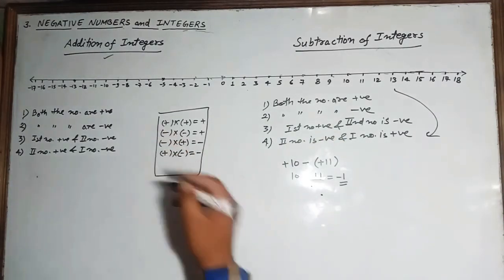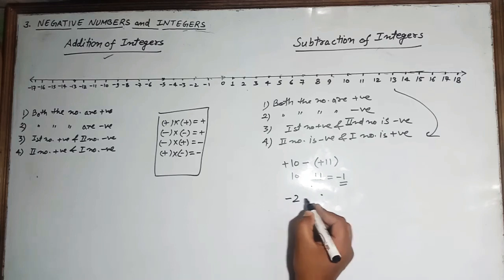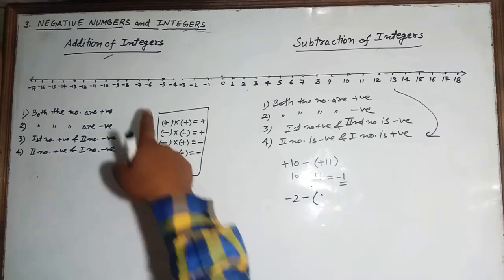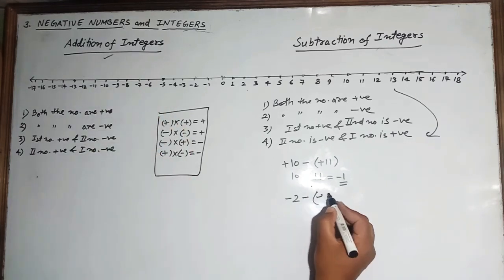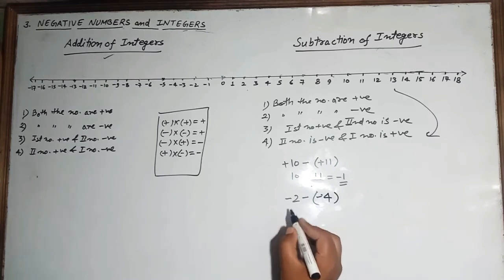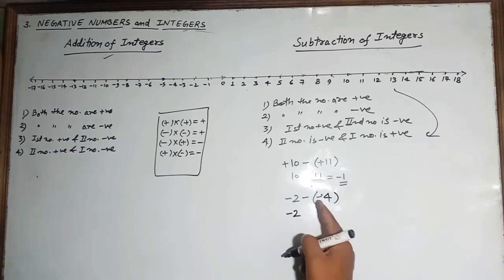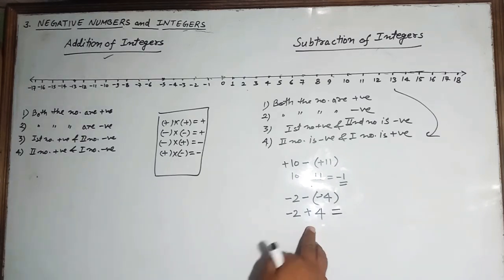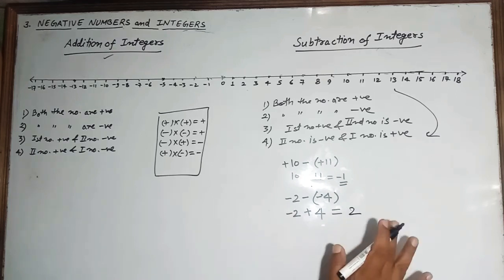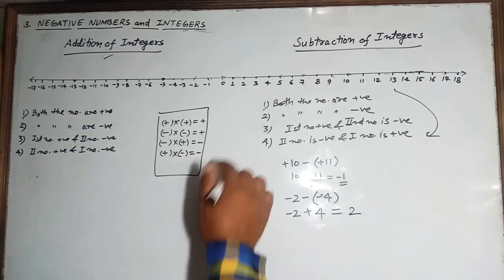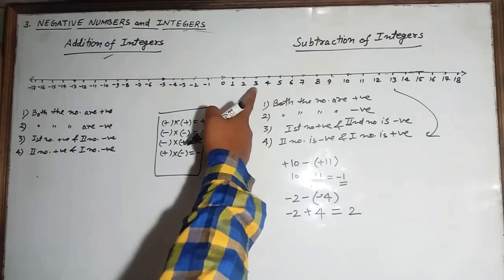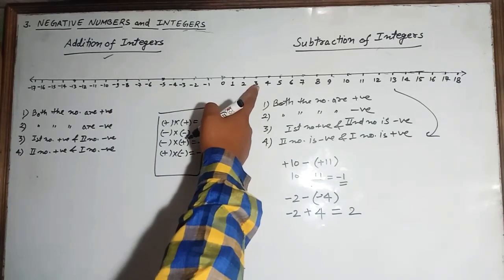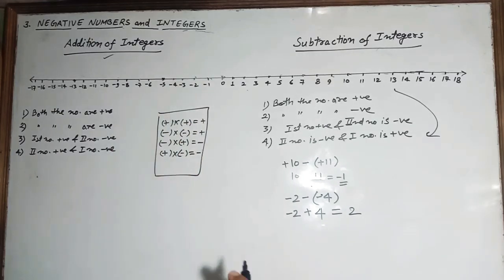Case 2 — both numbers negative: for example, minus 2 minus minus 4. Minus into minus becomes plus, so it becomes minus 2 plus 4. The greater number is 4, so 4 minus 2 equals 2, and the answer is positive 2.